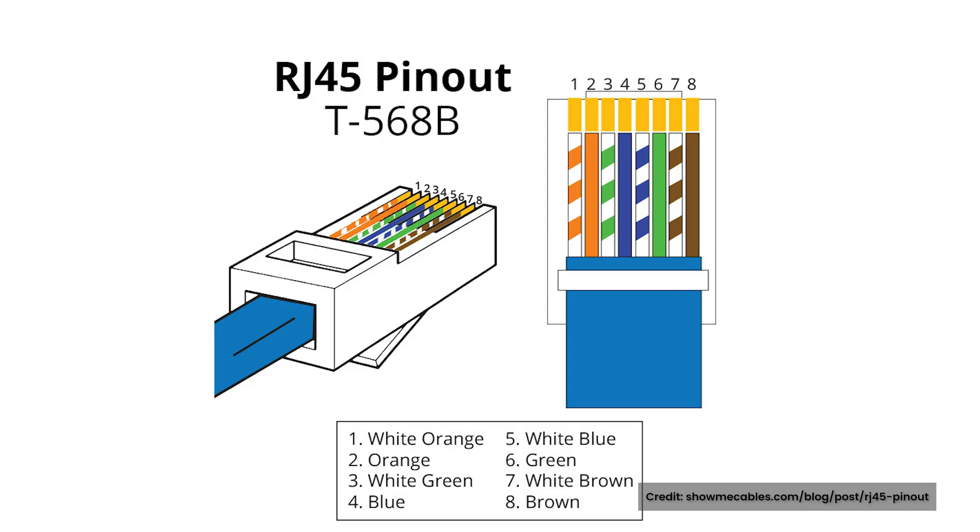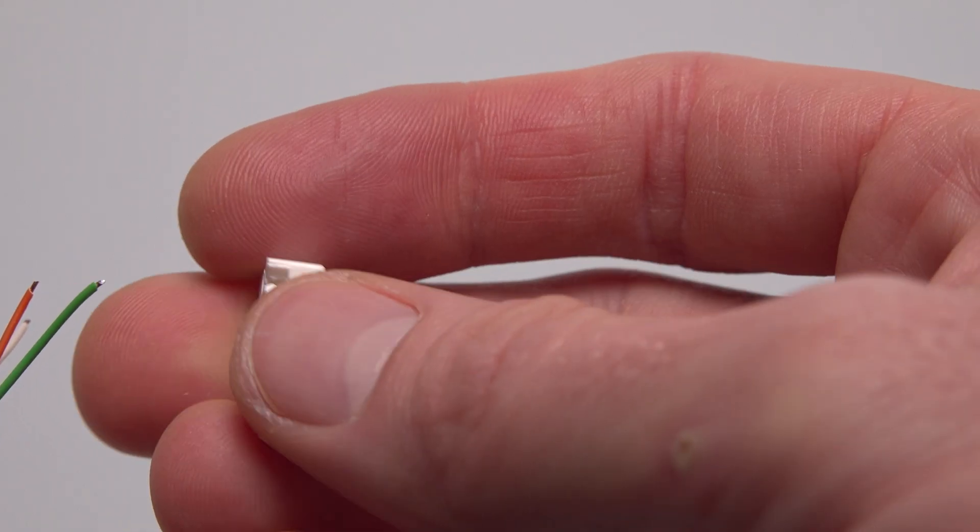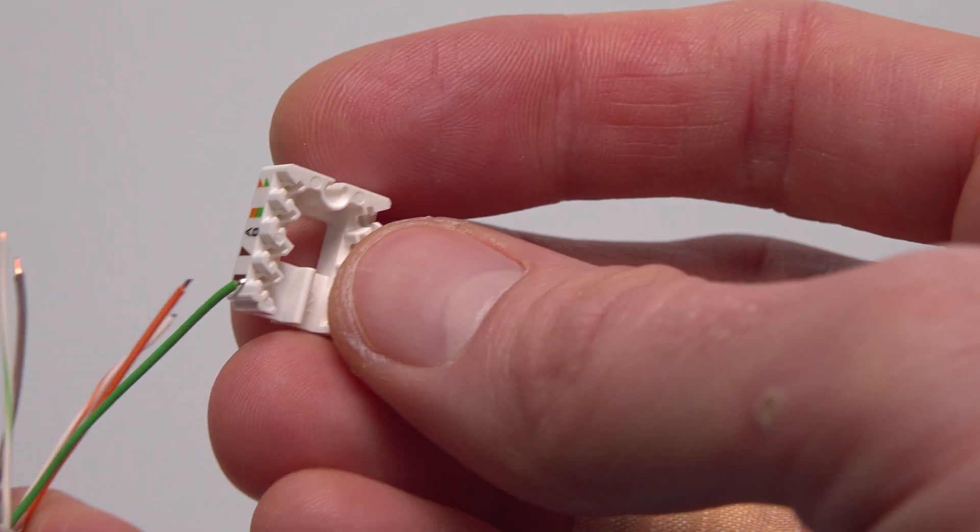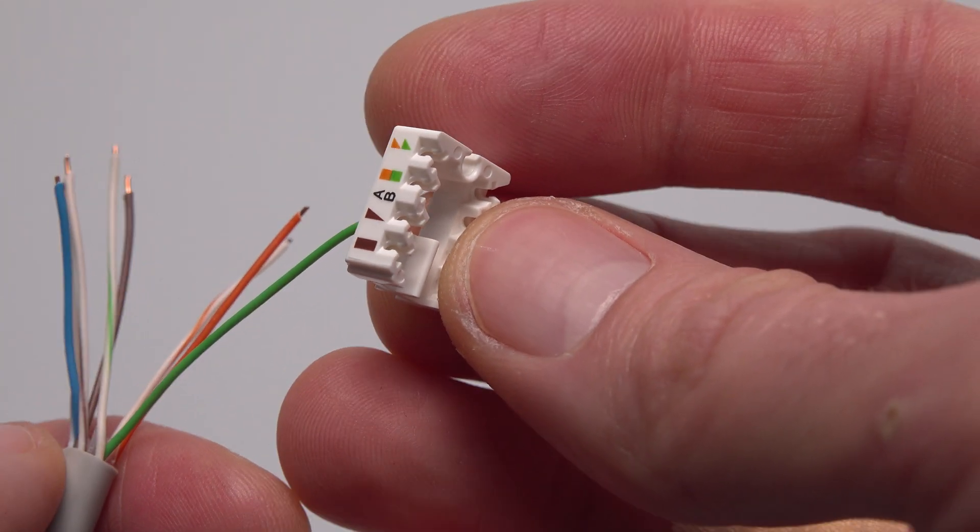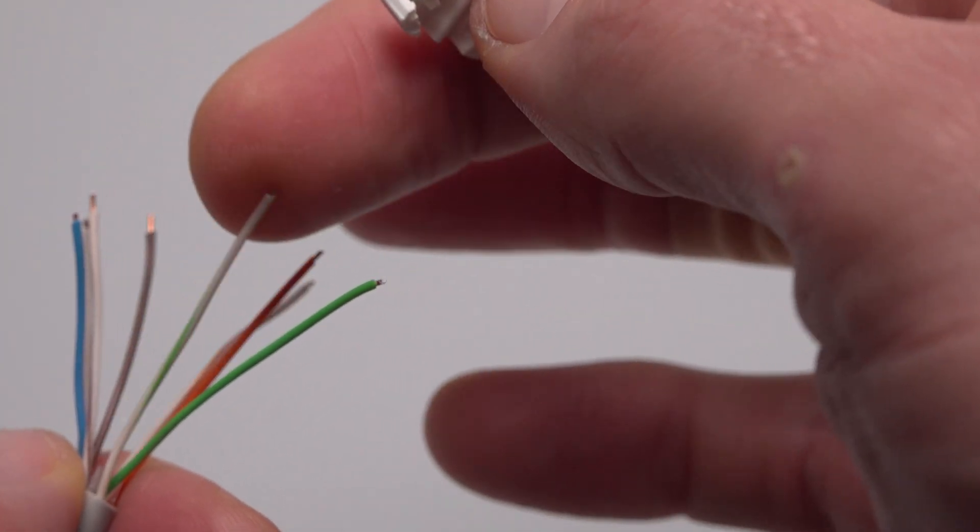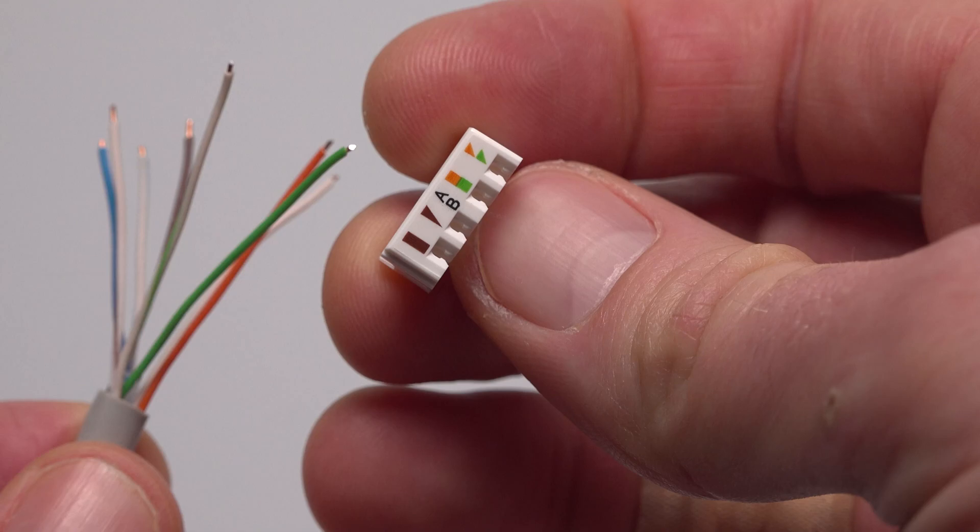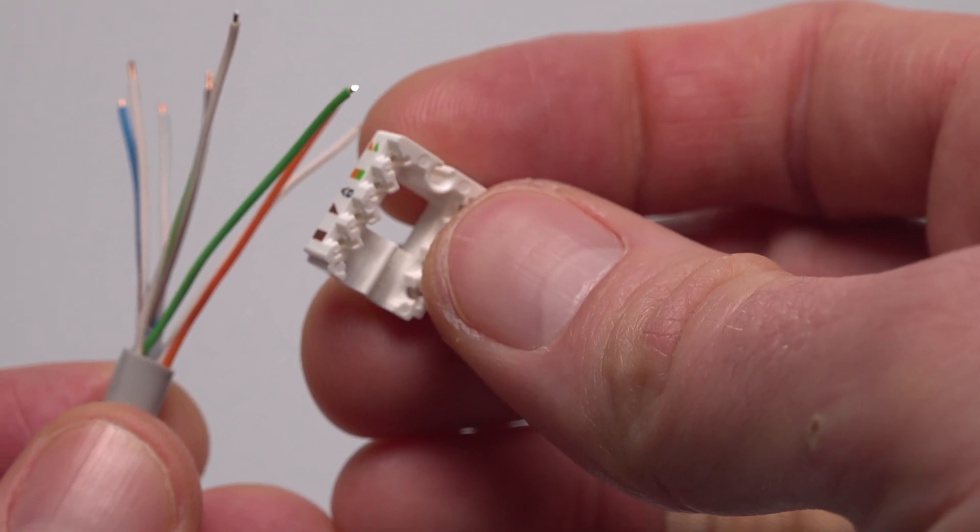I tend to use T568B because it's the most widely used. If you're adding cabling to an existing network setup or replacing a faulty end then make sure you use whatever standard is already in use at the location to make things easier for yourself and any other engineers who might do work there after you.